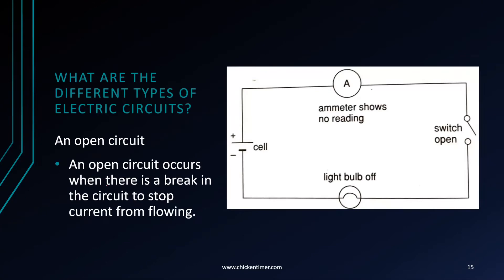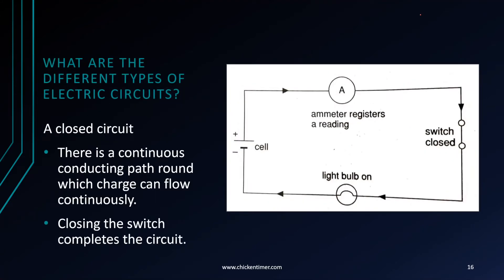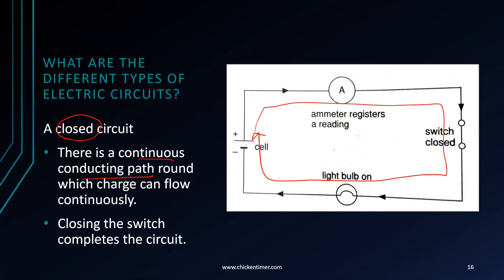There are different types of electrical circuits. The first is the open circuit, where there is a break in the circuit that stops current from flowing — the switch is open. When current stops flowing, the ammeter shows no reading. The second type is the closed circuit, where there is a continuous conducting path so charges from the cell can flow continuously. You get a closed circuit by closing the switch.